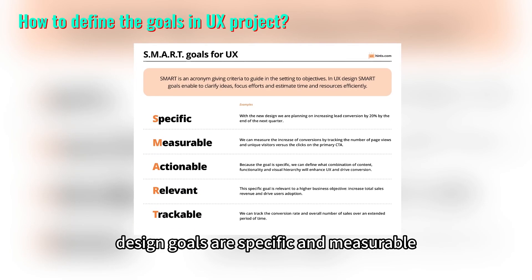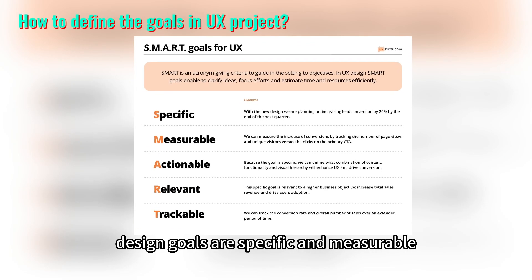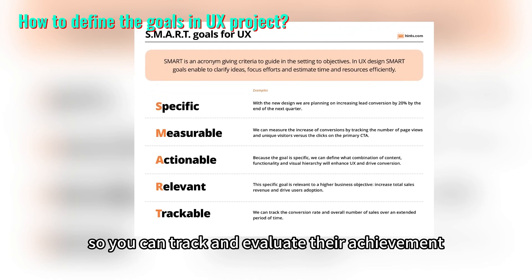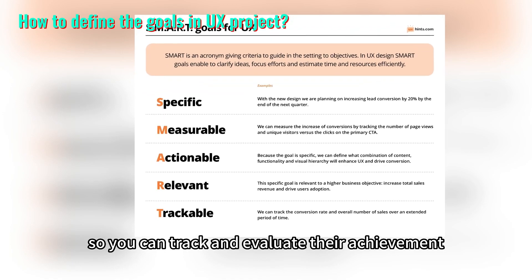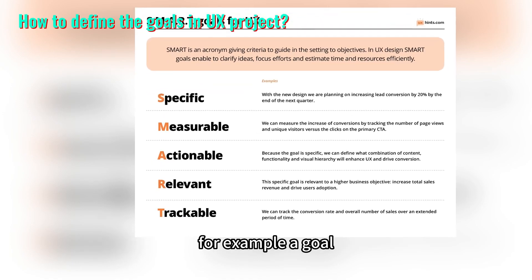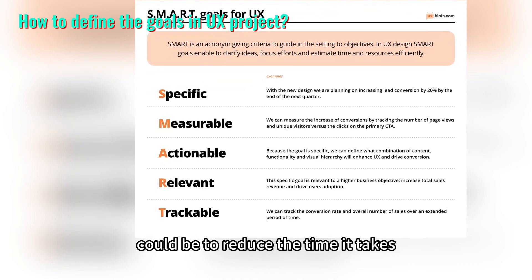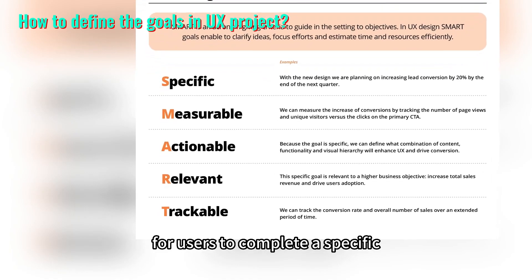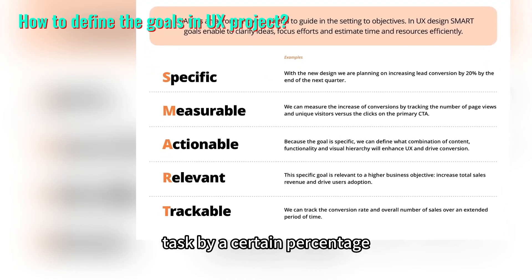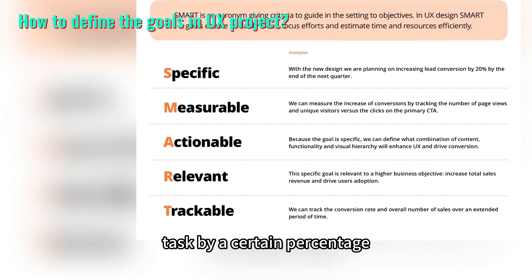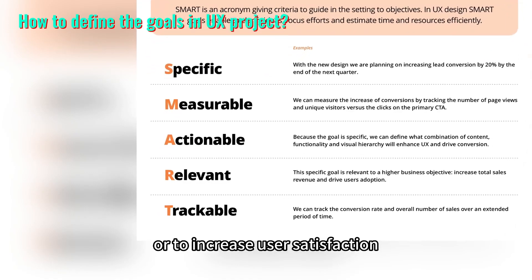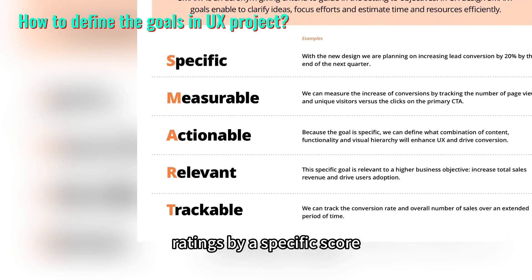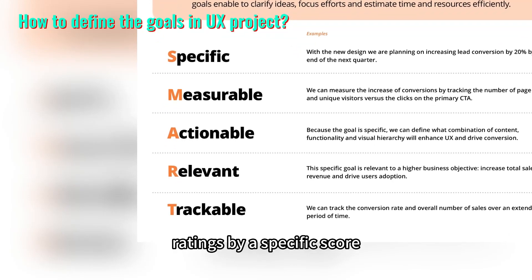Step five: make goals specific and measurable. Ensure that the design goals are specific and measurable so you can track and evaluate their achievement. For example, a goal could be to reduce the time it takes for users to complete a specific task by a certain percentage, or to increase user satisfaction ratings by a specific score.